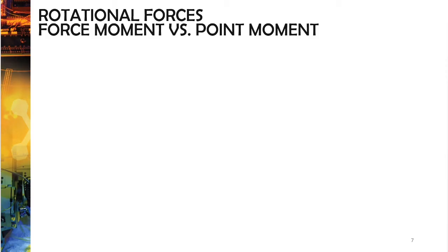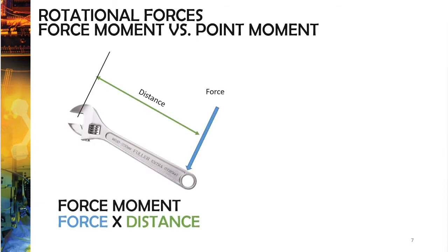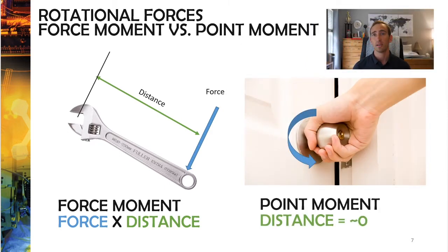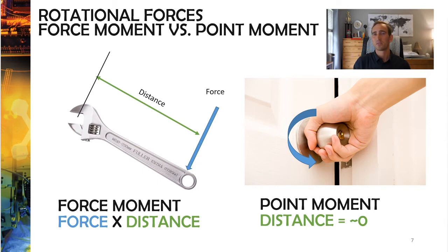There are two types of moments that we really talk about in ENES-102. The first is a force moment, which is caused by a force being applied some distance away from a point of rotation on an object. The other type is called a point moment — a moment that happens right at that particular point. A good example is a doorknob, where the distance your hands are from the pivot point is more or less zero.